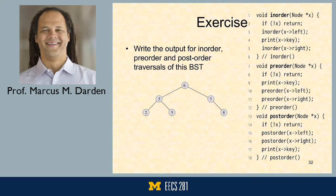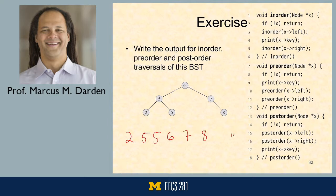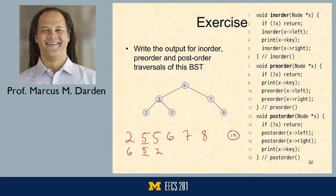Exercise: write the output for in-order, pre-order, and post-order traversals of this BST. For in-order traversal, since it's a BST, data comes out sorted: 2, 5, 5, 6, 7, 8. For pre-order traversal, process the node first, then left: start with 6, then 5 (left), then 2, then the right subtree. Pre-order gives 6, 5, 2, 5, then continuing right with 7 and 8.